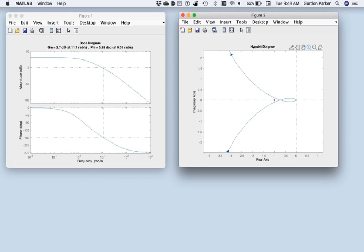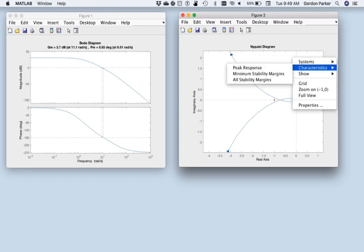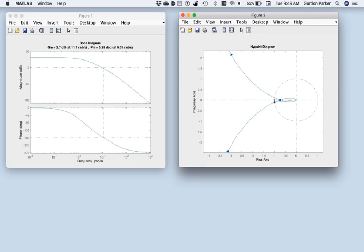So here's our crossing with the real axis. And I would need to put a unit circle on this thing. So I would need to have a circle that kind of goes around the origin with radius 1. I don't really want to have to draw that, so fortunately MATLAB will do it for us. If I go in here and say characteristics, I can ask it to show us the stability margins. And there we go with a nice little unit circle. Doesn't quite look like a circle because our axes aren't the same.